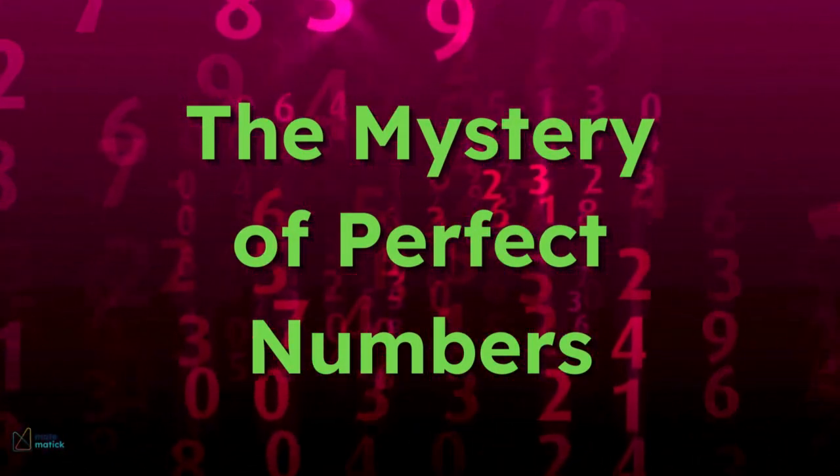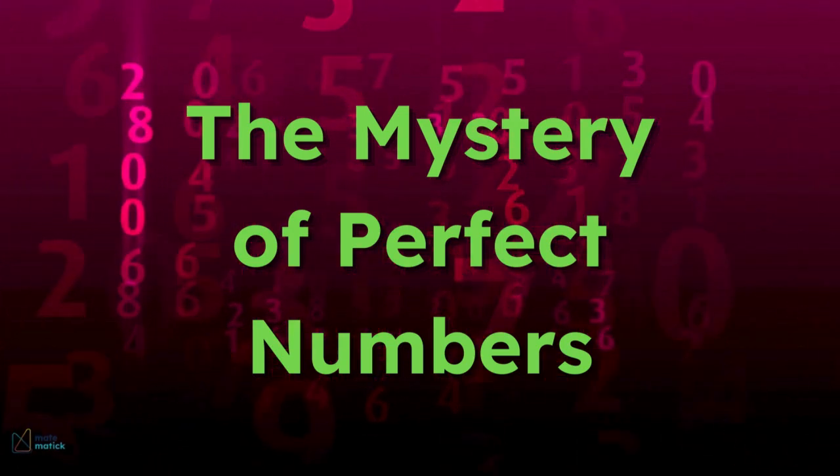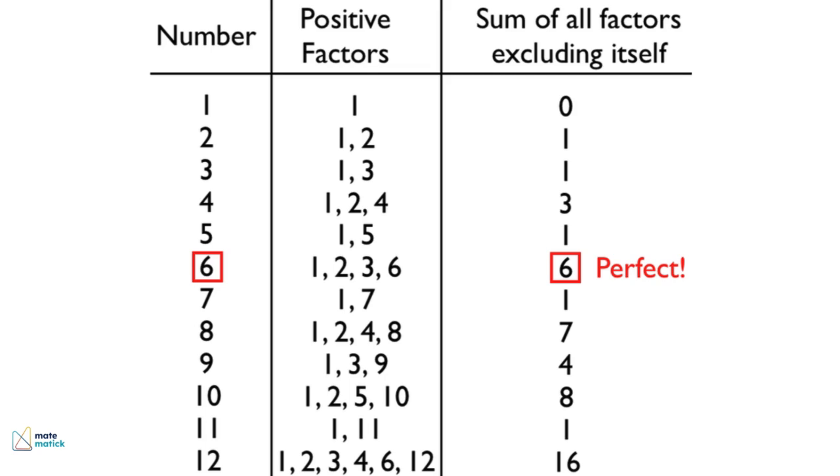Have you ever wondered what makes a number perfect? In mathematics, a perfect number is a positive integer that is equal to the sum of its proper divisors, excluding itself. Proper divisors are the numbers that divide a given number exactly, without leaving a remainder, other than the number itself.